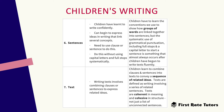In the seventh stage, writing text involves combining clauses or sentences to express related ideas. Children learn to combine clauses and sentences to convey a sequence of related ideas. Texts are often defined as writing involving a series of related sentences, and children can now start writing short stories. Texts become more coherent in meaning and more cohesive in structure — it's not just a list of unconnected sentences. Children start learning how to join up sentences and make the ideas in each sentence consistent.